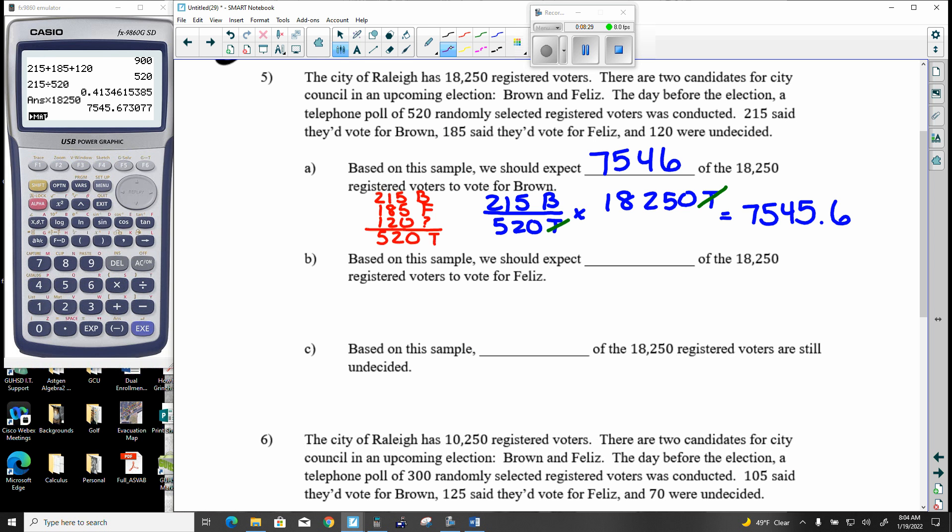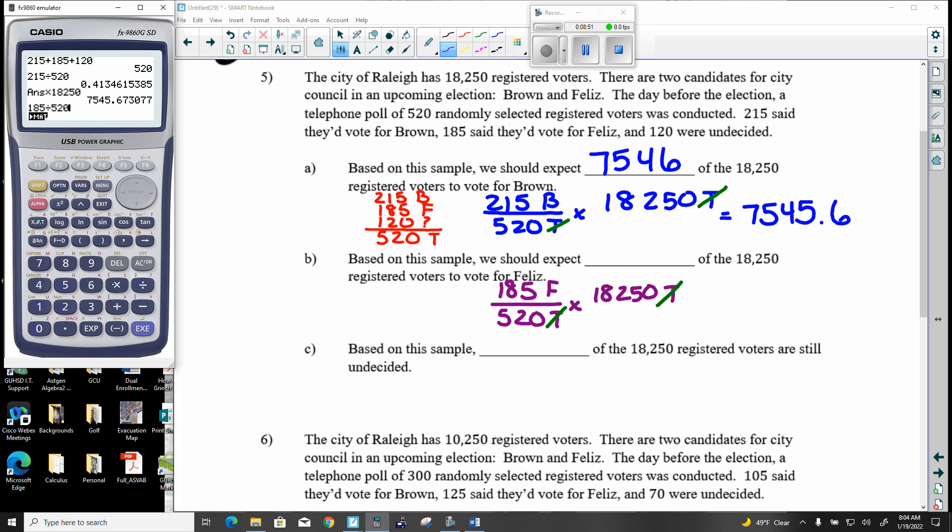Let's go with Feliz. So that would be 185 out of the 520. Apply that to the 18,250. So you got the label total drops. So 6,492.78 ish. So that's going to round up. So 6,493.